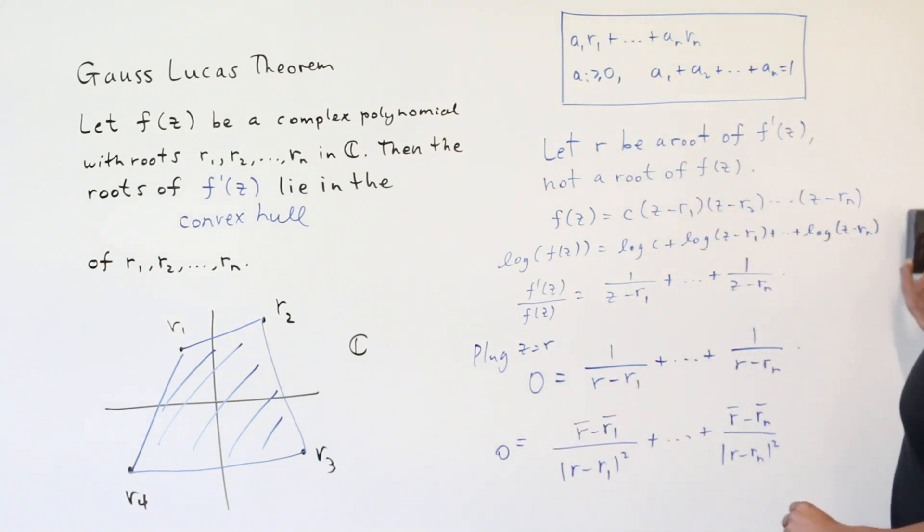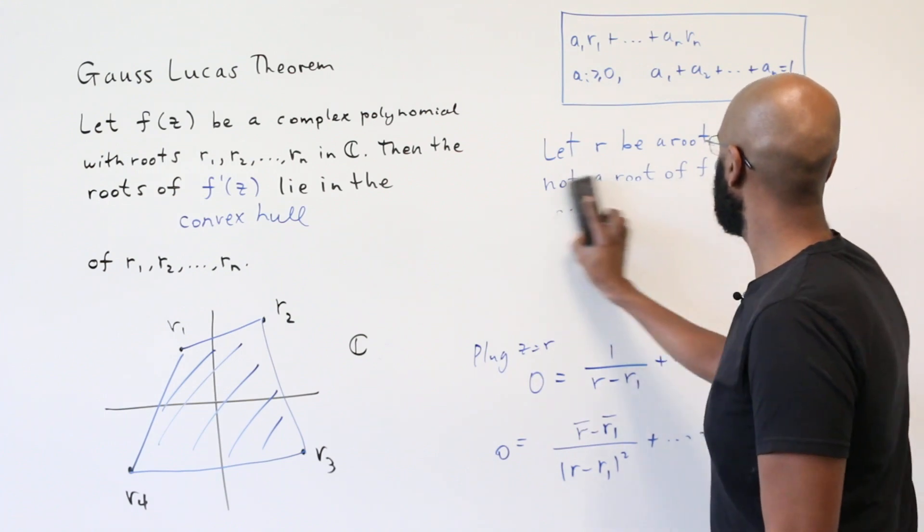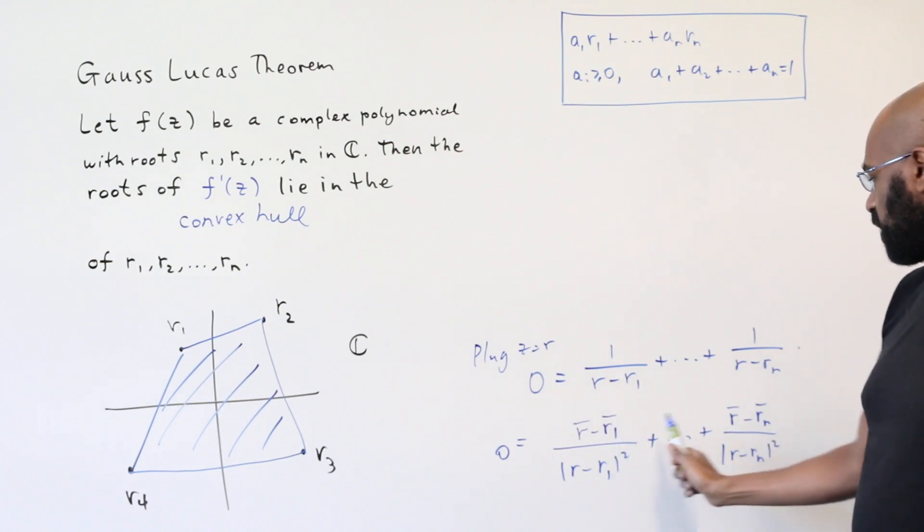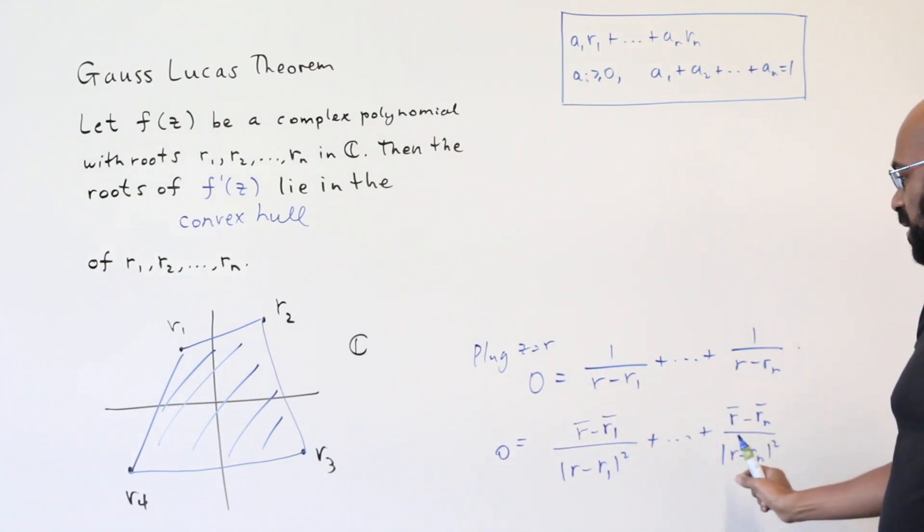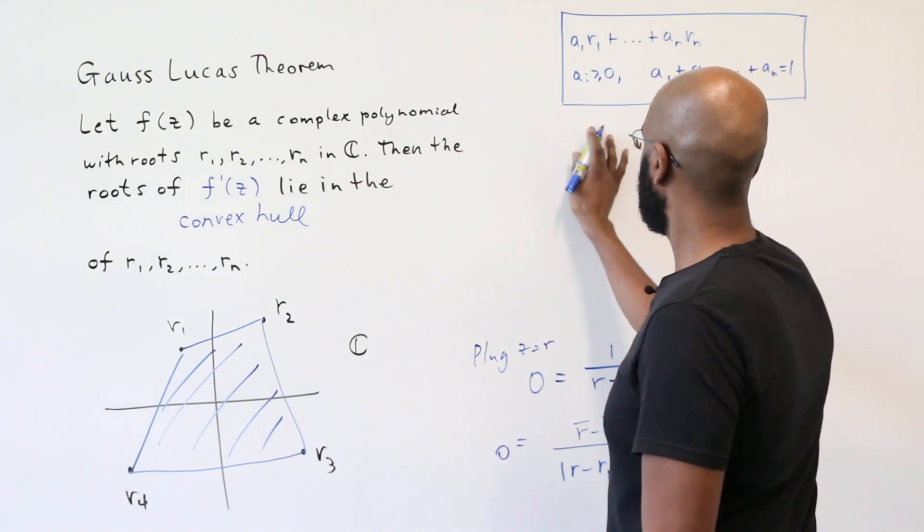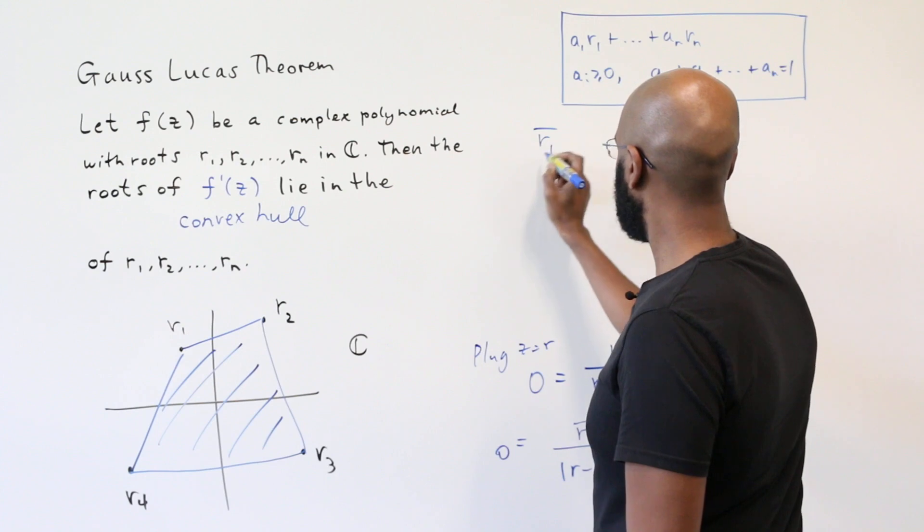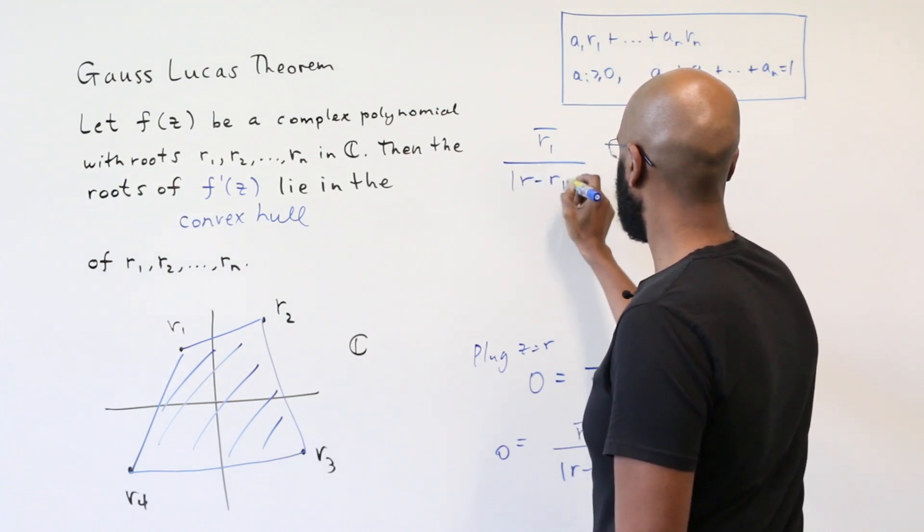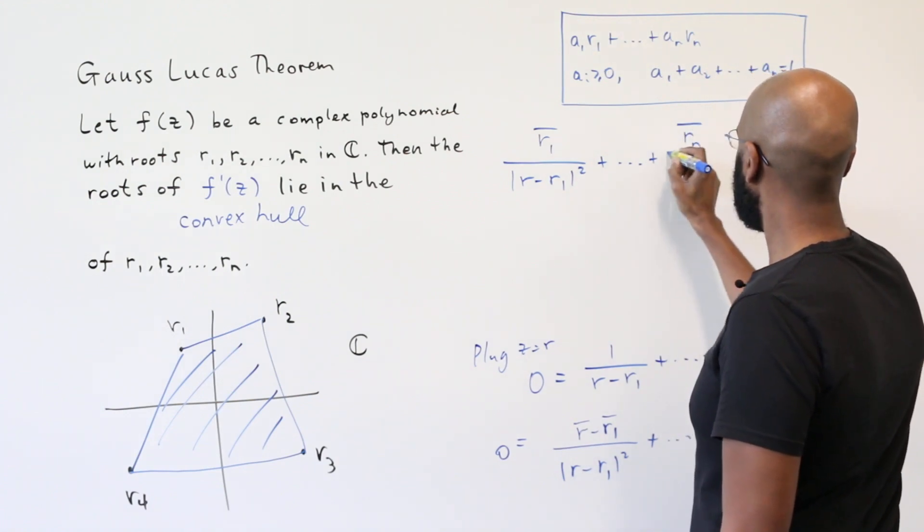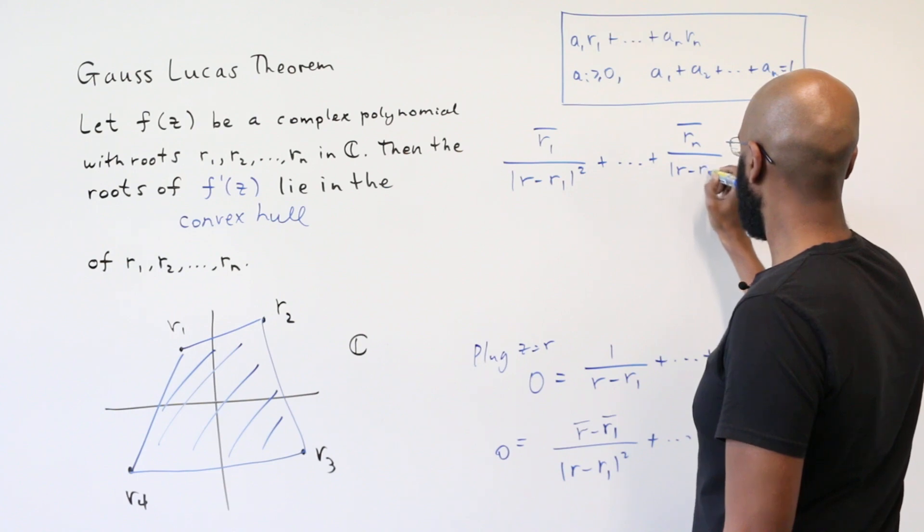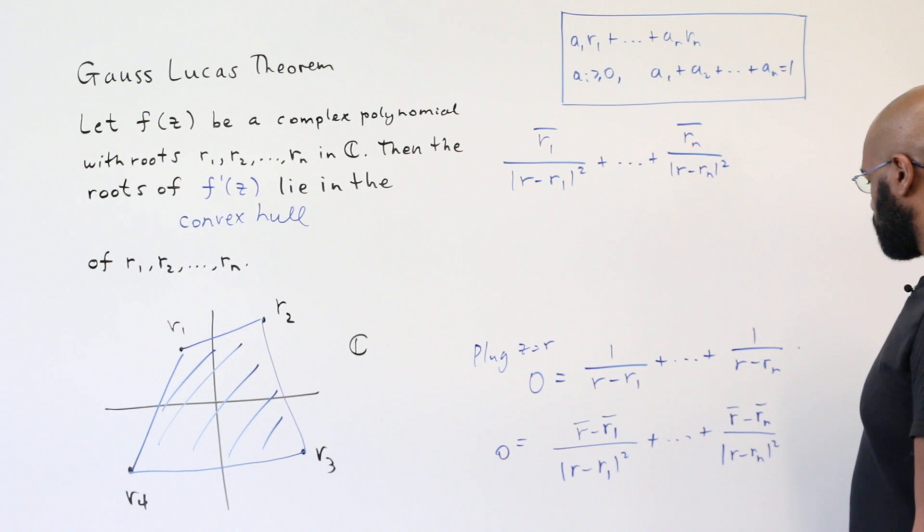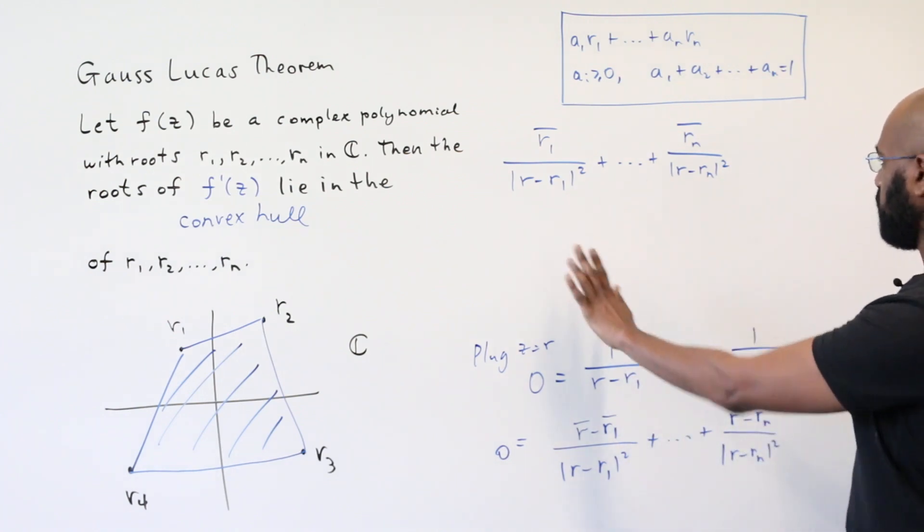So this is an expression that we have for r in terms of the ri's. We notice we have these negative signs in front of the conjugates of each of the ri's. Let's move all of those factors to the other side. Then we'll have something like the conjugate of r1 over the modulus of r minus r1 squared plus et cetera, the conjugate of rn over r minus rn modulus squared. That's all of these negative terms moved over.